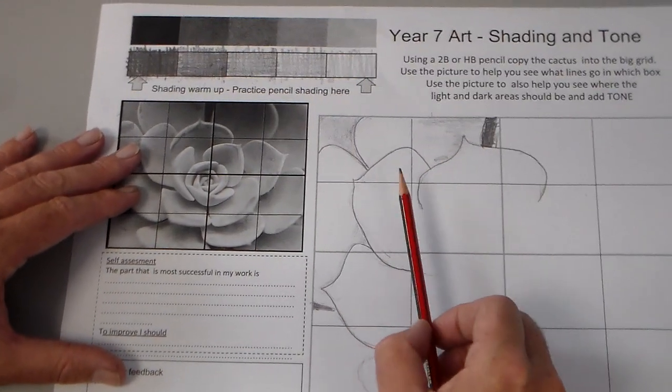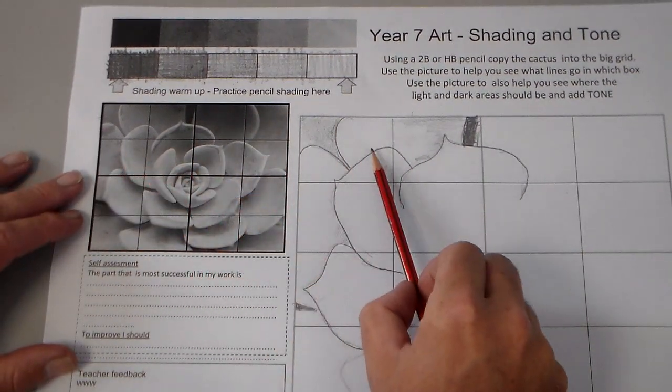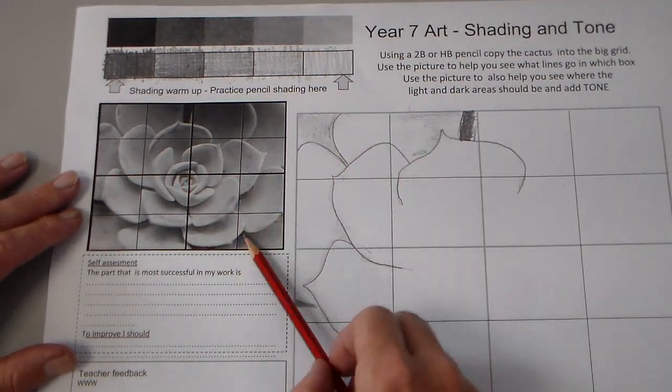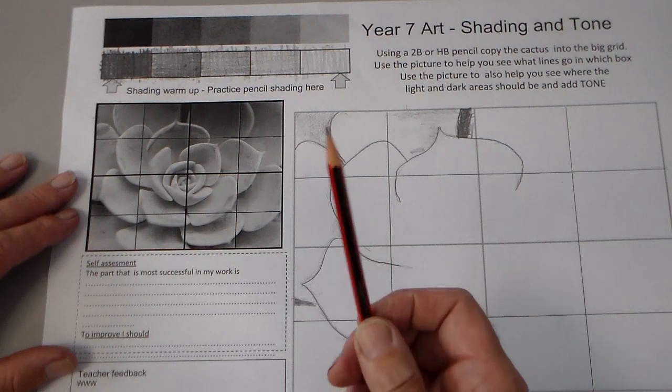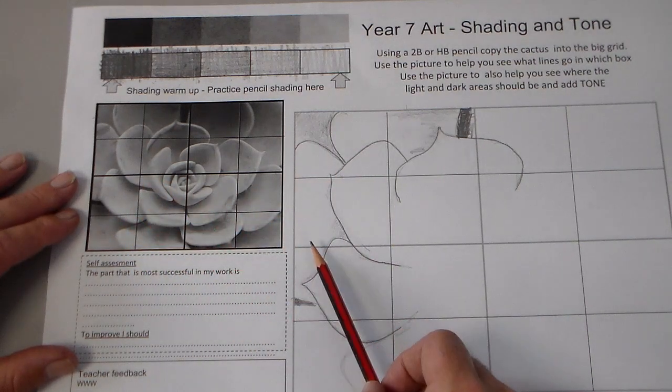The idea is that square by square, matching from this square to this square, this square to this square, we build up the whole picture using just the light and dark tones to match this picture here with this picture.